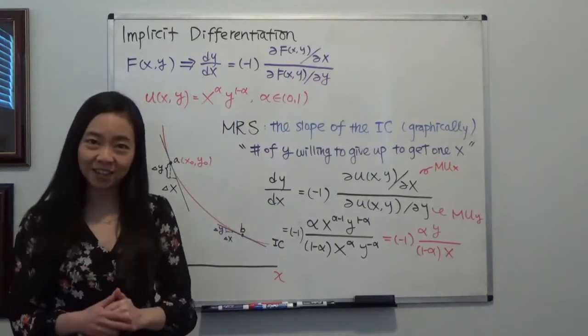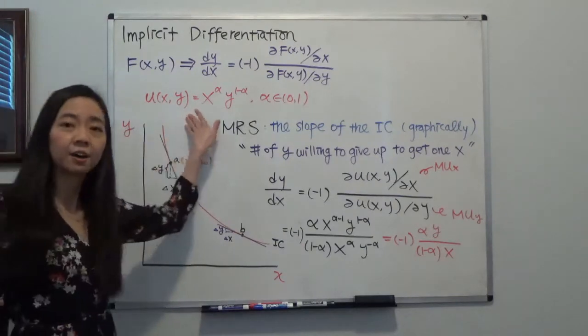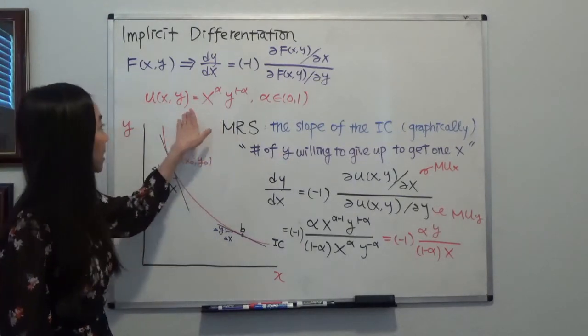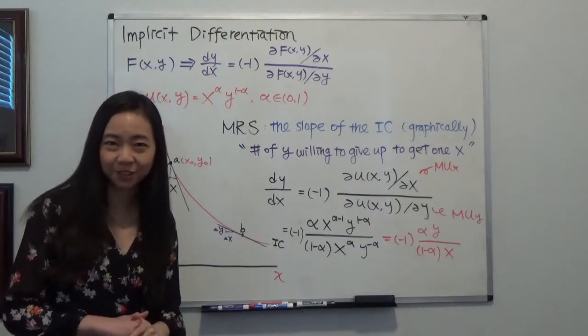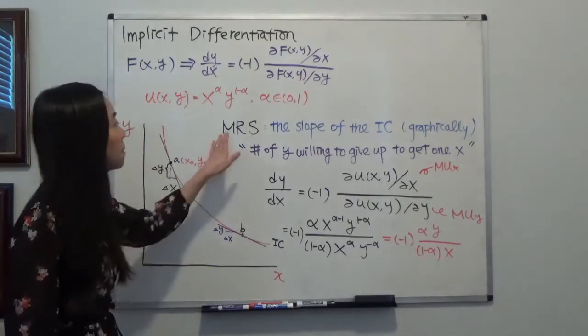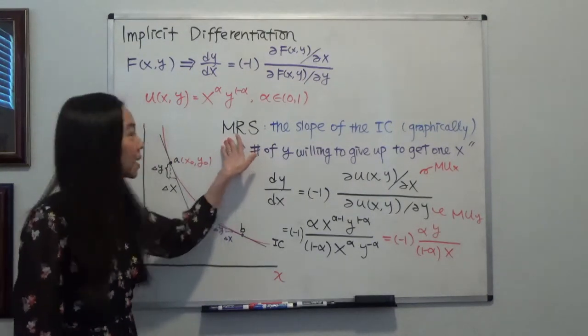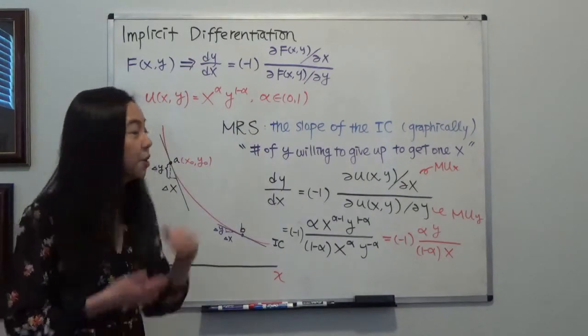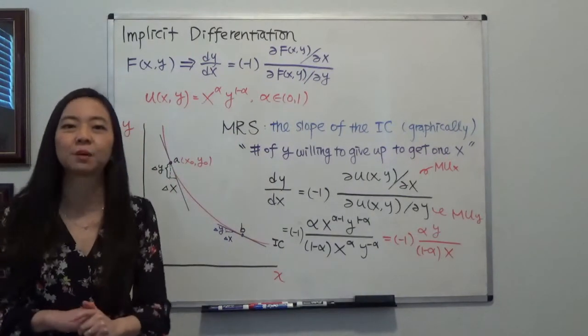And one application is where we have a utility function, the Cobb-Douglas utility function, and we want to find the marginal rate of substitution. Then we can use implicit differentiation to help us find the marginal rate of substitution.